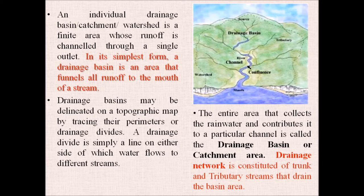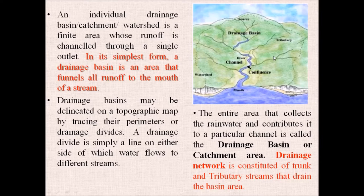Drainage basins may be delineated on a topographic map by tracing their perimeter or the drainage divides. A drainage divide is simply a line on either side of which water flows to different streams. Beyond this line, water will not flow into this basin. This is the highest point — beyond it the slope is in a different direction, so water drains toward opposite sides. The entire area that connects and contributes its drainage water to a particular channel is called the drainage basin or the catchment area.